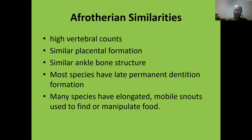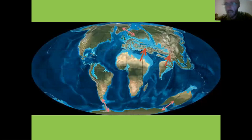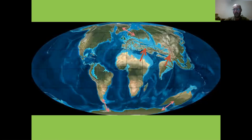Many species coincidentally have elongated mobile snouts used to find or manipulate food — just like an elephant, just like an elephant shrew, just like an aardvark. This goes back to the Eocene, 50 odd million years ago, when Africa was isolated from the rest of the world, as was Australia and South America. These individual land masses had no real connection, creating completely isolated ecosystems and a lot of convergent evolution to fill ecological gaps.